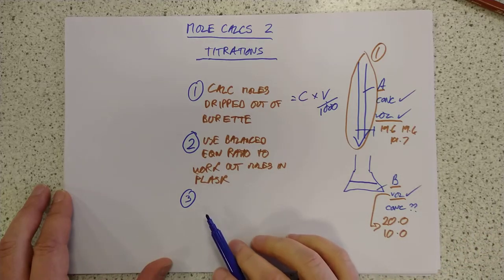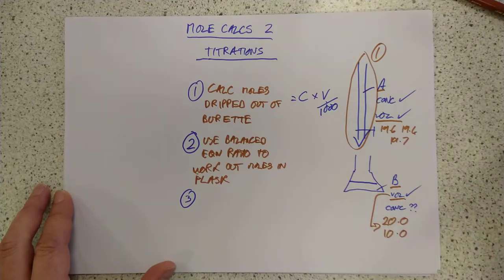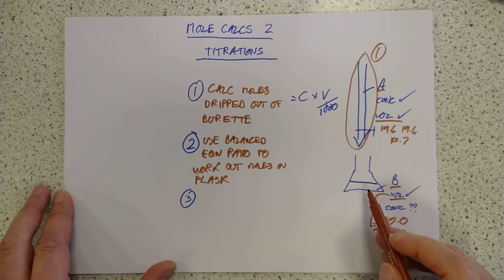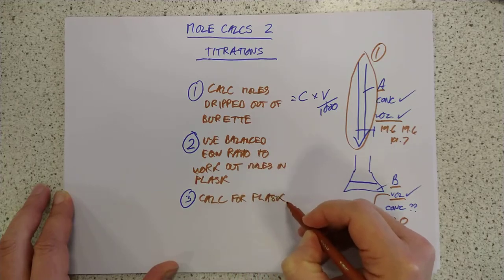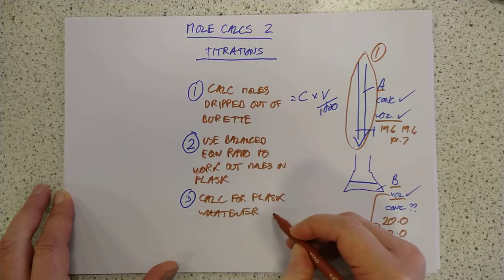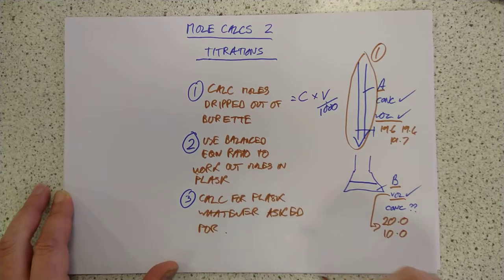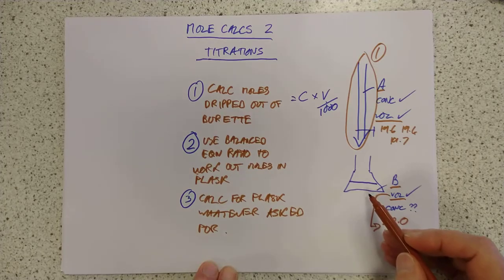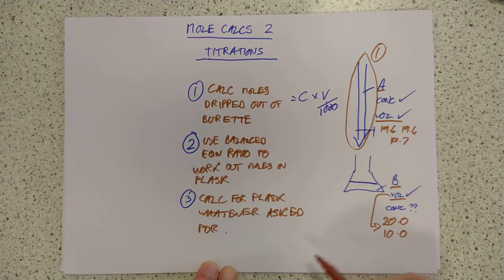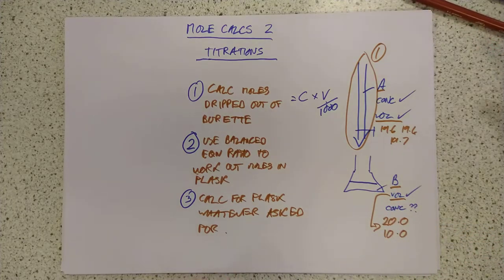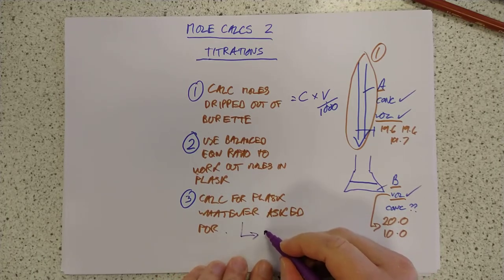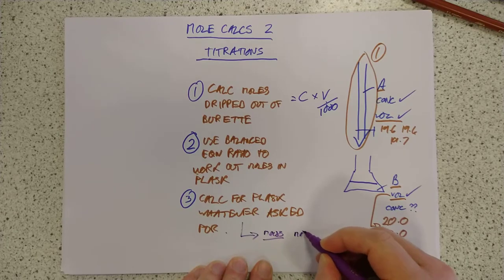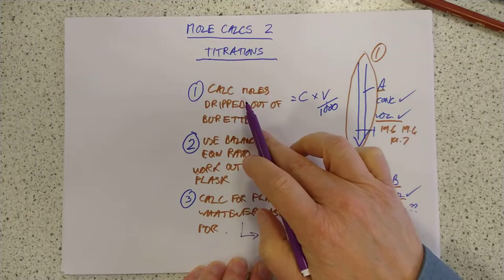That's usually not what the question is asking for, although it can on occasion do that. So, at national five, stage three was always simple. It was always calculate the concentration in the bottom beaker. Stage three at higher, a bit less friendly. I'm going to say calculate for the bottom flask whatever it is the question wants to know. Sometimes they'll ask you for a mass, for example. And that's okay. You can do that. Because you know the moles in the bottom flask. So, the mass is just the moles times the GFM of whatever it is you're dealing with.